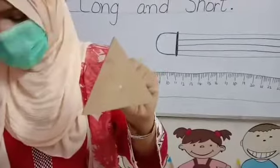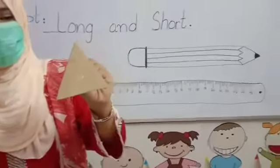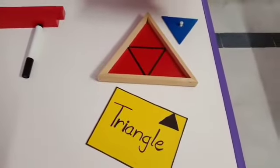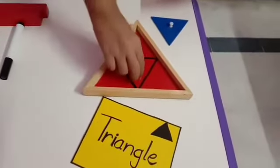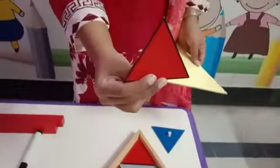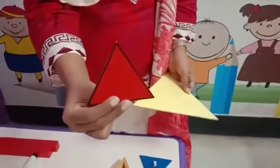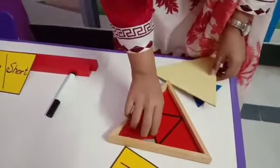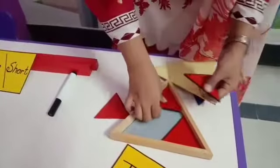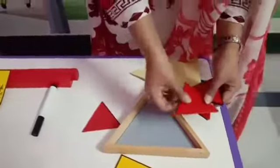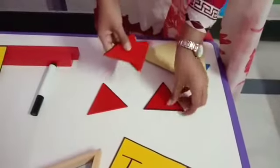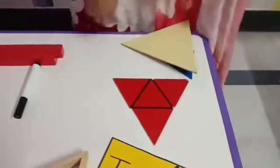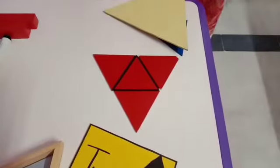Which shape is this? This is triangle. This is a triangle box. This one is also a triangle. And then this is triangle. So this is triangle.